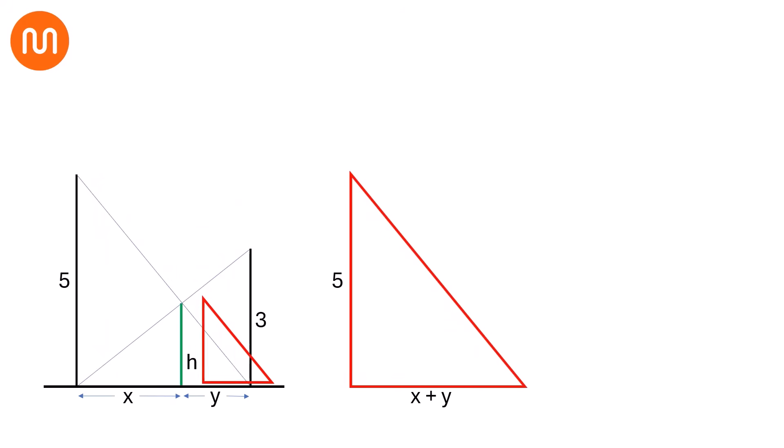And in this smaller triangle, the base is y and the height is h. These two triangles are similar. So we can write 5 over h is equal to x plus y over y.